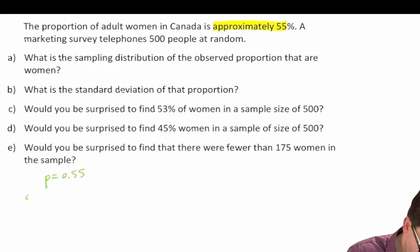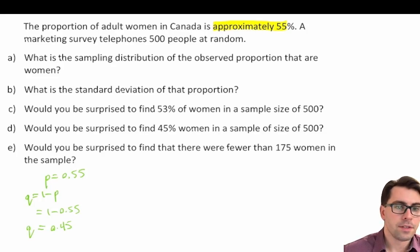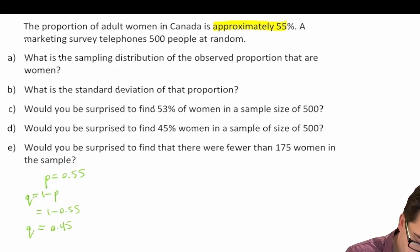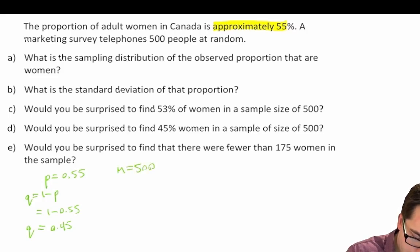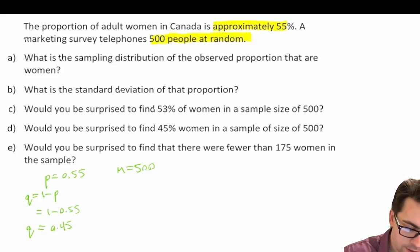Now what does that mean? We know that q is equal to 1 minus p, so this is equal to 1 minus 0.55, which is equal to 0.45. So q is equal to 0.45. We also know our sample size: n is equal to 500. We're told right here that they phoned 500 people at random, so our sample size is 500.